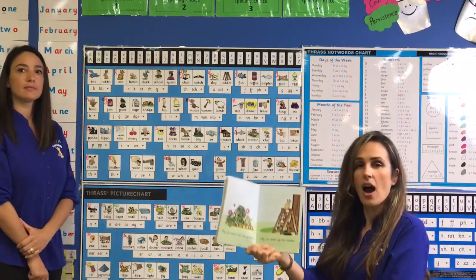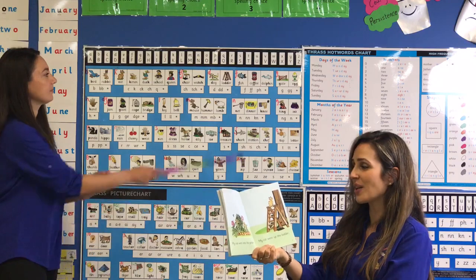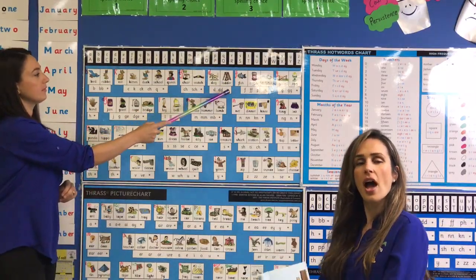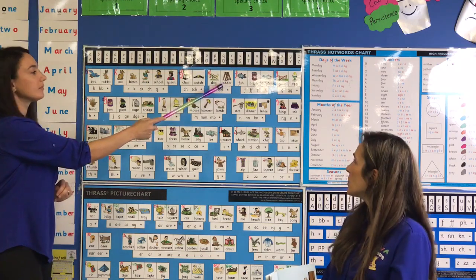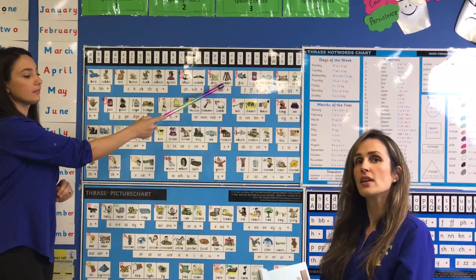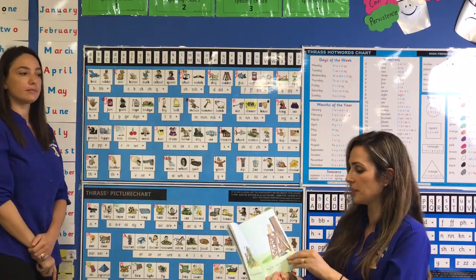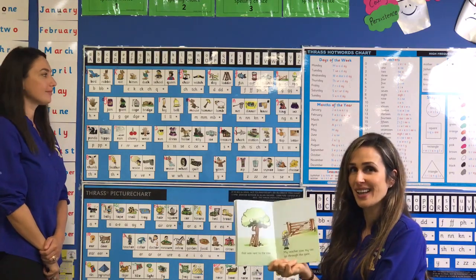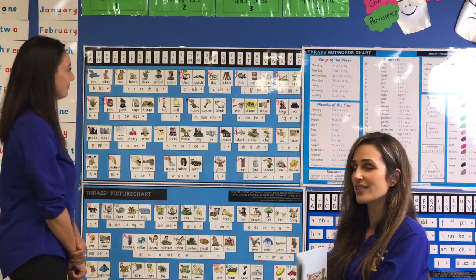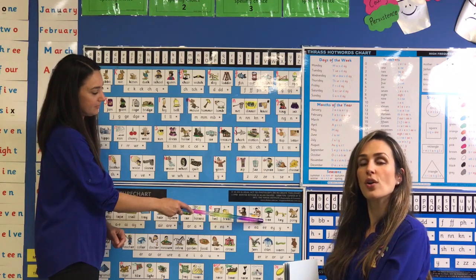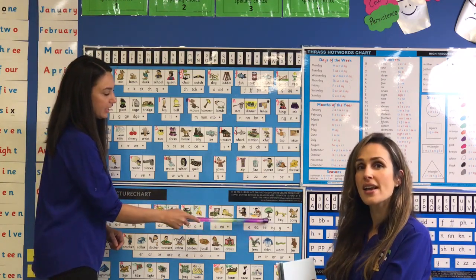My cat went up the ladder. 'Ladder' is on our Thrass chart, back on the consonant side in the D box, and in the word 'ladder' right in the middle we have a digraph — two letters making one sound — and the digraph is DD making the D sound. That was next to the tree. Find 'tree' — it's on our vowels, the first row in the E box, and we have the digraph EE making the E sound. Try that with your mouth everyone — E!